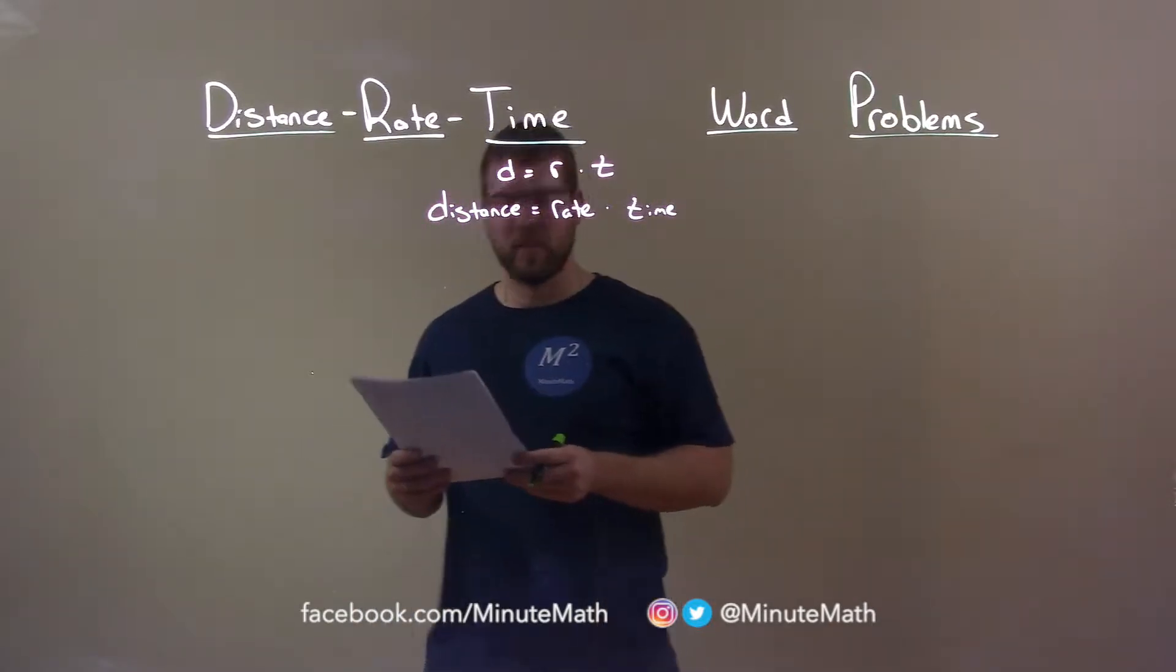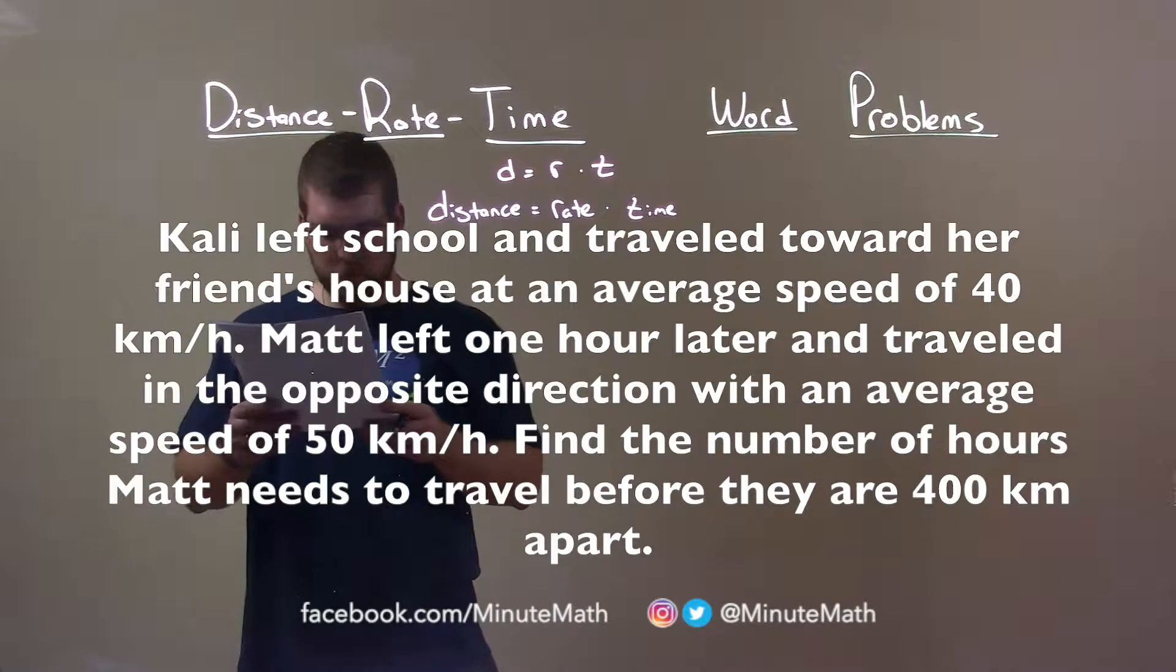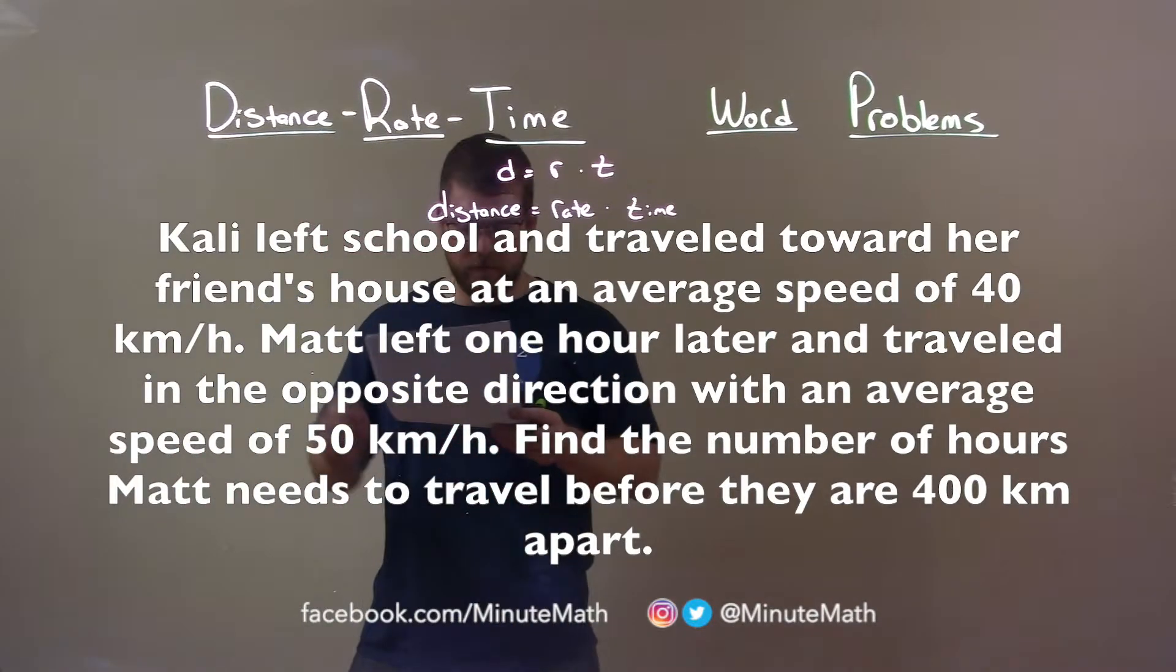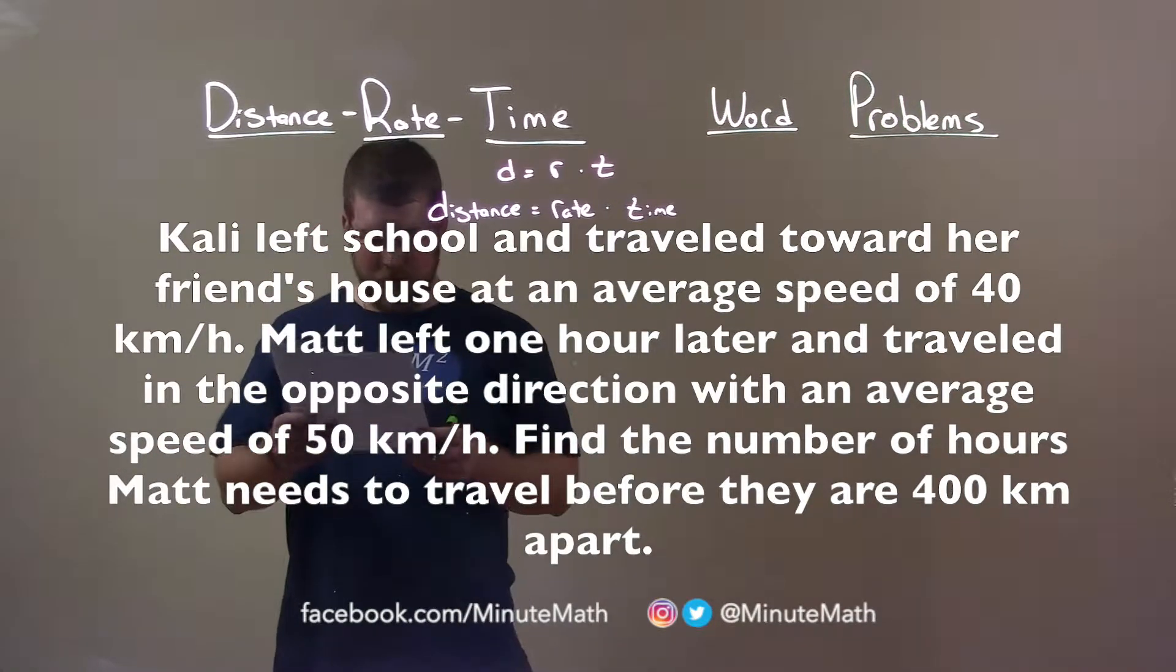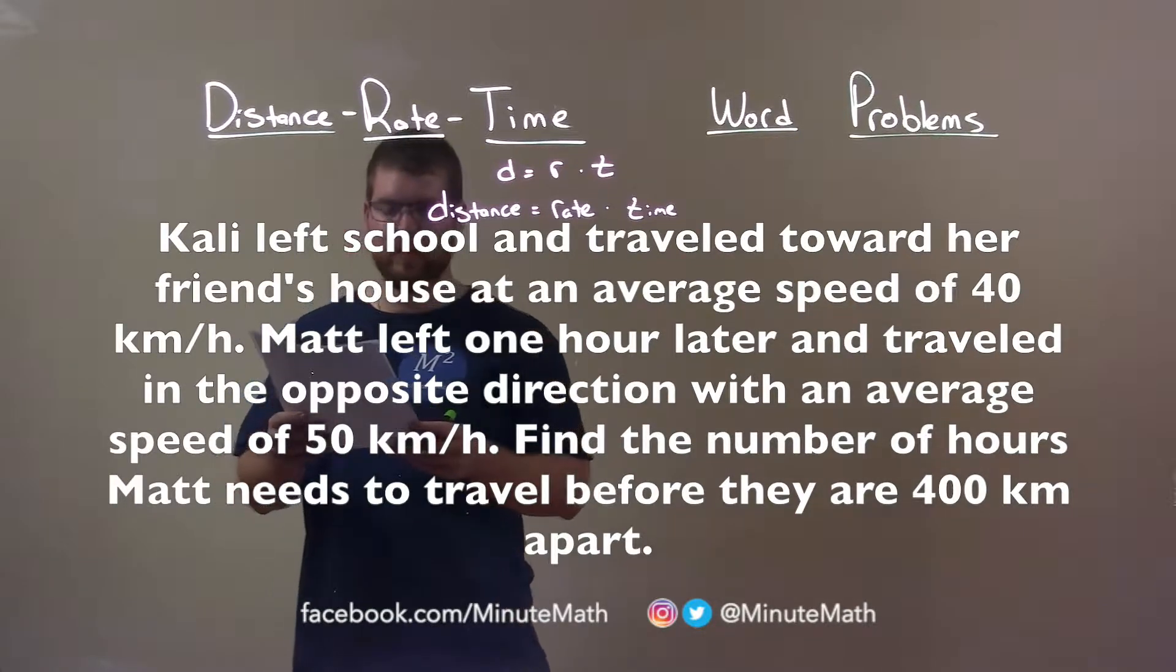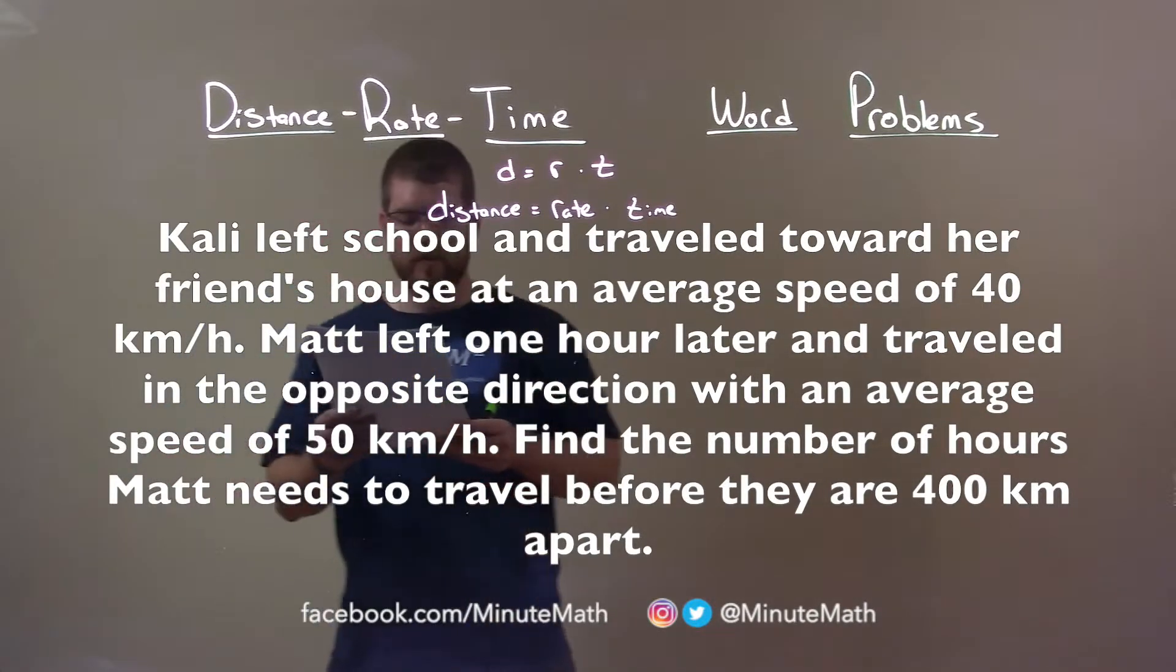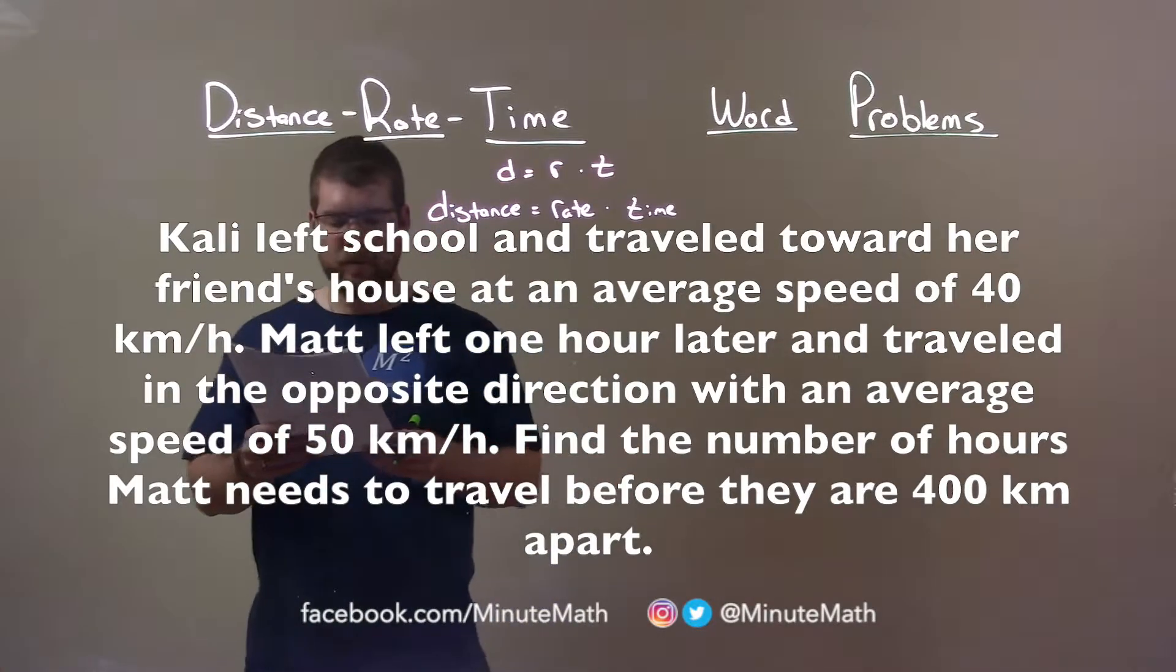So if I was given this problem: Kali left school and traveled toward her friend's house at an average speed of 40 kilometers per hour. Matt left one hour later and traveled in the opposite direction with an average speed of 50 kilometers per hour. Find the number of hours Matt needs to travel before they are 400 kilometers apart.